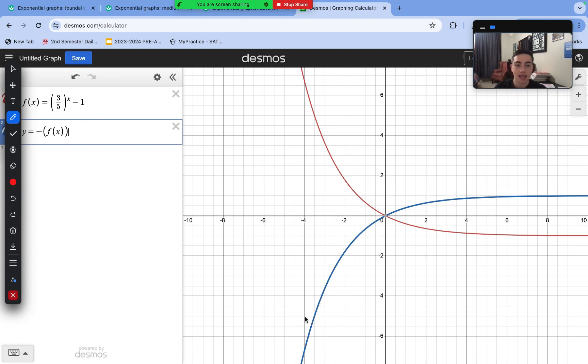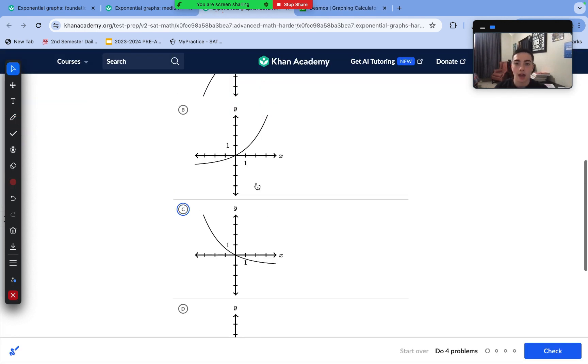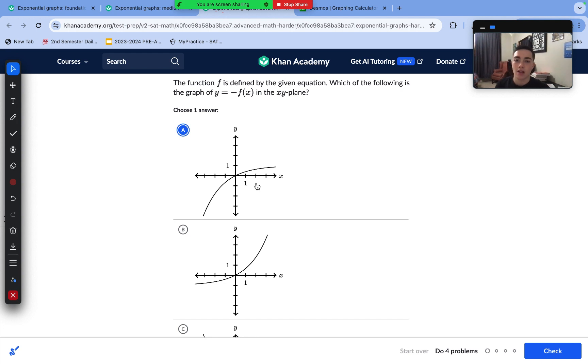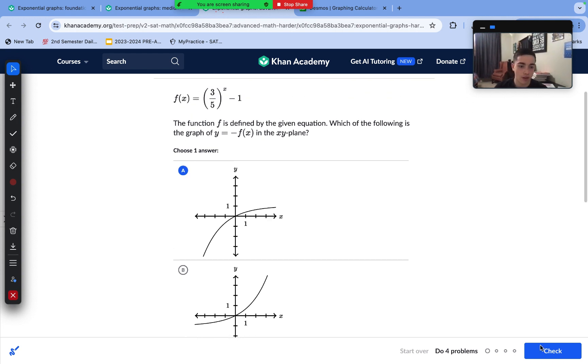So we need to find an answer choice which most closely matches this. Answer choice A is the only one that matches that, so answer choice A is correct for this question.